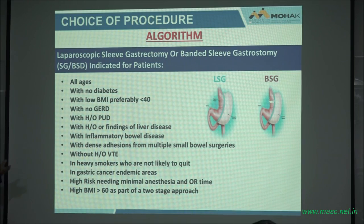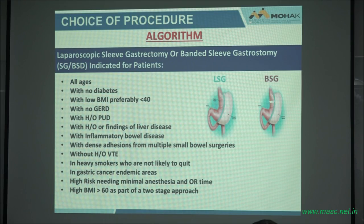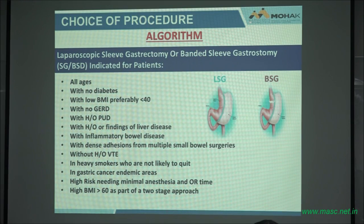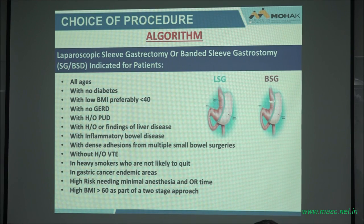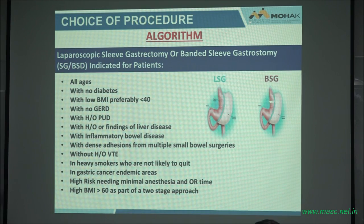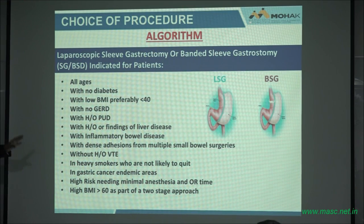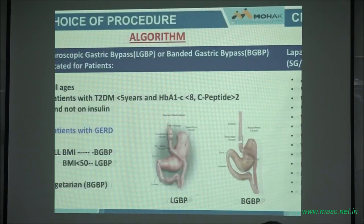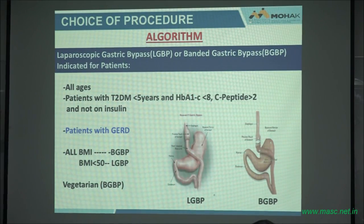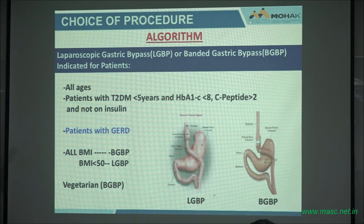We don't want to give patients with GERD a sleeve. I wish some of the doctors who do sleeves were here to hear the talk this morning — a cruroplasty alone does not treat reflux. These are the indications for the sleeve. The gastric bypass works for all ages. Patients with type 2 diabetes — not too severe, not on insulin — are candidates. Once they get on insulin, we start thinking about the MGB.